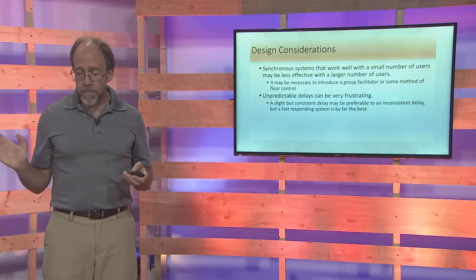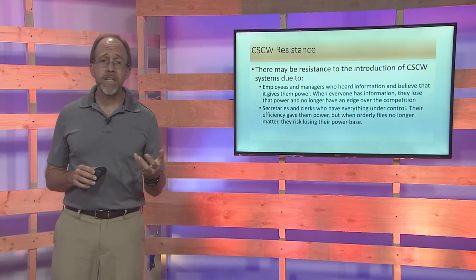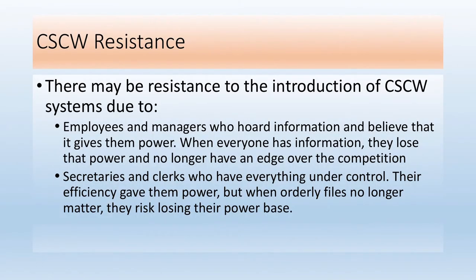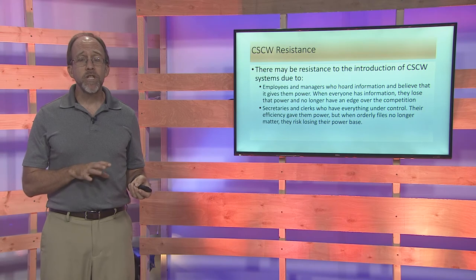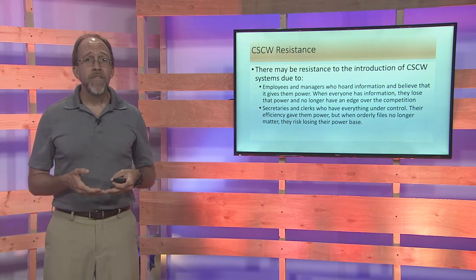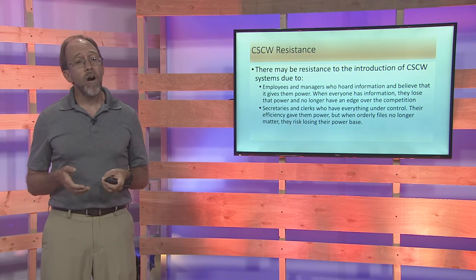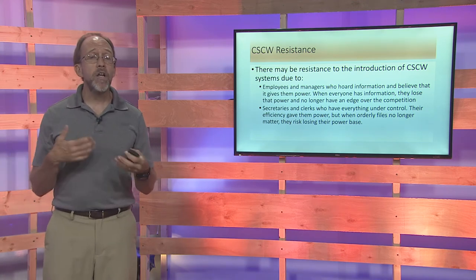Standard design also involves dealing with unpredictability and resistance — specifically what I'll call political resistance. Political resistance occurs when somebody uses access to information or a system as a power base. Politics is usually about the allocation of power, and in groupware systems you're often asking people to give up control of things that formed part of their power base. You need to be able to manage that level of resistance when introducing groupware or multi-user systems, because you're giving up information to create the collaborative environment.